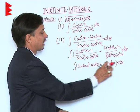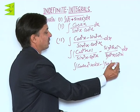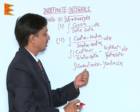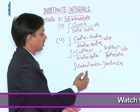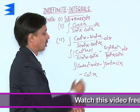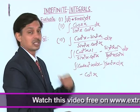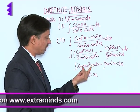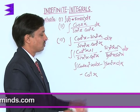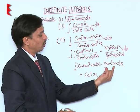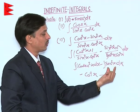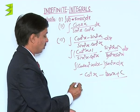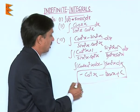So we need integration of cosec²x dx minus integration of sec²x dx. The integration of cosec²x is minus cot x because the derivative of cot x is minus cosec²x, so integration of positive cosec²x is minus cot x. The anti-derivative of sec²x is tan x since the derivative of tan x is sec²x. So the final answer is minus cot x minus tan x plus c.